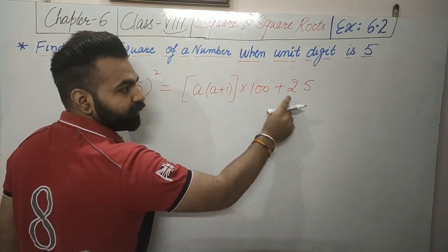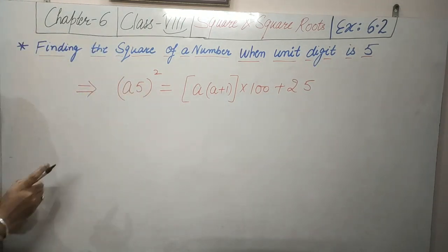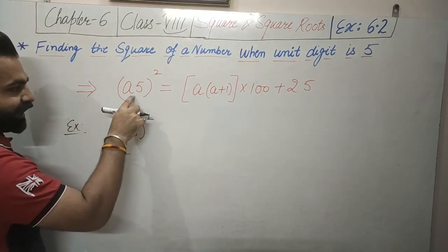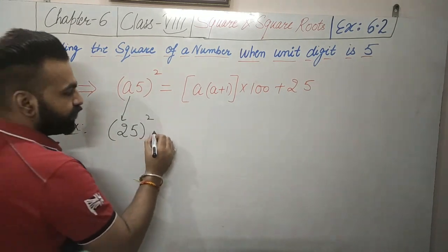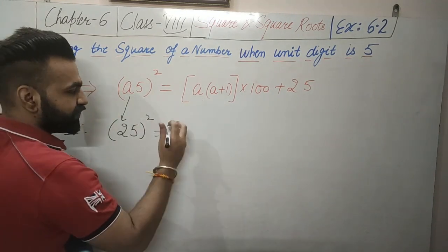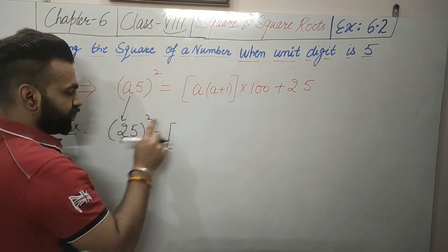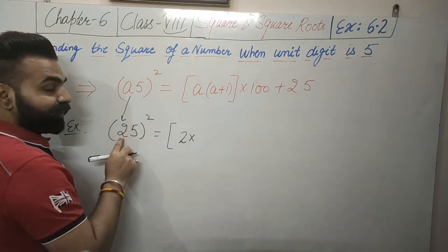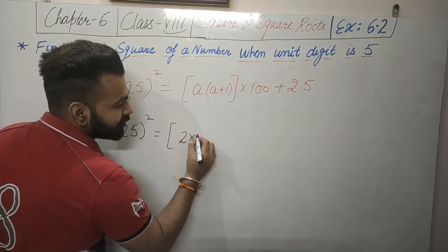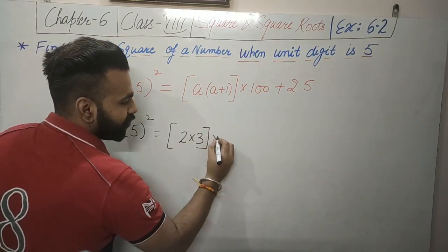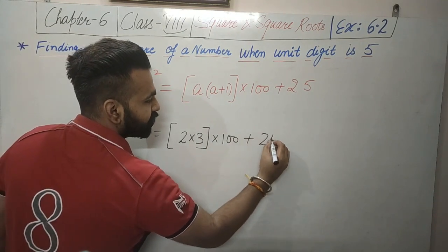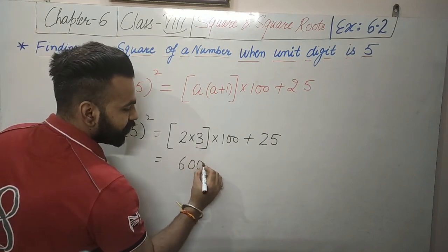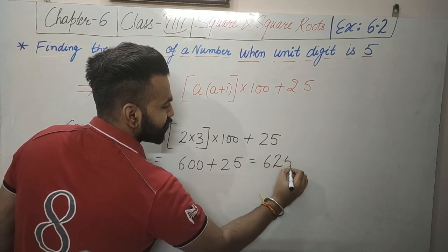The formula states that a5 squared equals a into (a + 1) multiplied by 100 plus 25. For example, if we want to calculate 25 squared, then a is 2. We put the value of a in the right-hand side: 2 into (2 + 1), which is 2 into 3, equals 6. Then 6 into 100 is 600, and 600 plus 25 equals 625.